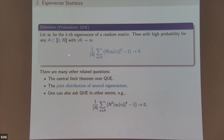There are other generalizations: you can take a square root to get an essentially sharp statement, ask about the joint distribution of several eigenvectors (since the previous statement is about one eigenvector), and ask about l^4 norms and other quantities. These are the eigenvector statistics.